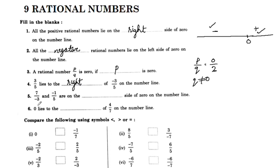7 by negative 3 and negative 1 by 5 are on the left side of 0 on the number line. 7 by negative 3 is a negative rational number. Negative 1 by 5 is also a negative rational number. Both lie on the left side.